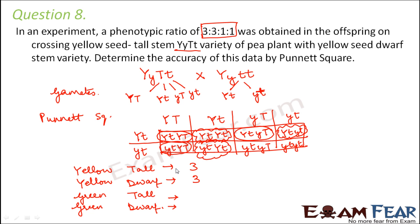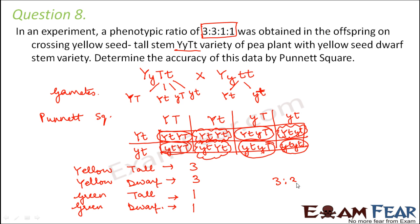Green and tall requires two small y's and at least one capital T; green and dwarf requires everything recessive. So we get one green tall and one green dwarf. Therefore the phenotypic ratio is 3 (yellow tall) : 3 (yellow dwarf) : 1 (green tall) : 1 (green dwarf), which is exactly the same as given. This confirms the phenotypic ratio mentioned in the data is accurate.